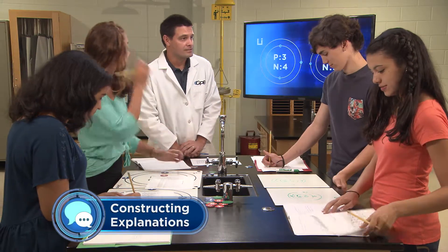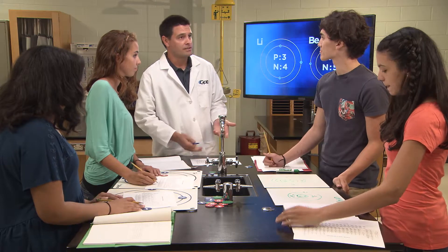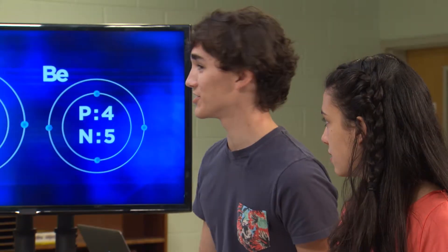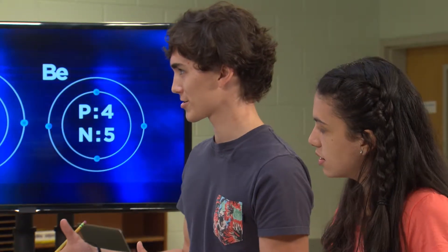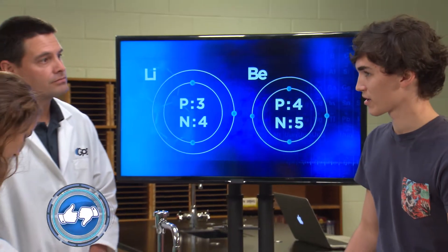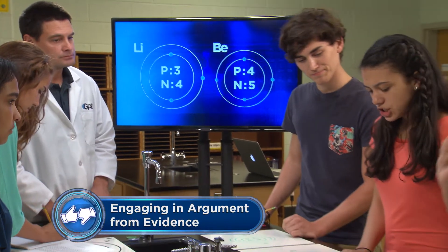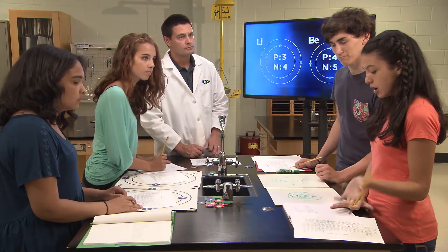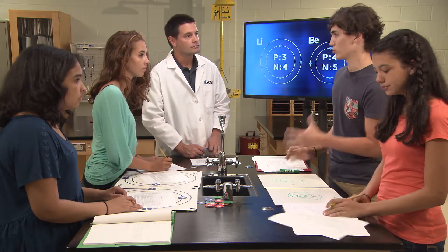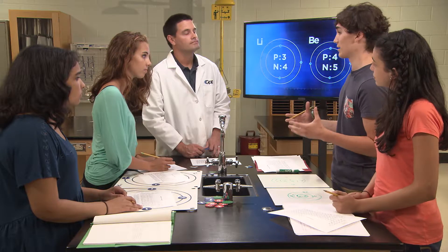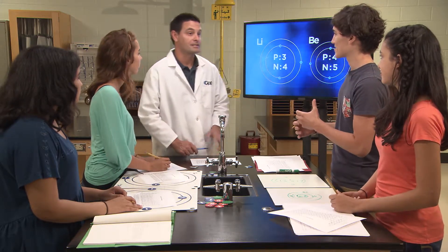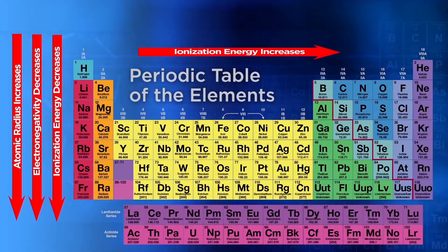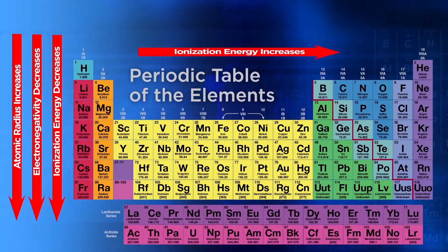Let's see what everyone predicted for the periodic trends across a period. Starting with ionization energy — we figured out that it increases across a period. Let's justify that conclusion: ionization energy increases across a period because the attraction between the nucleus and the electron increases, making it harder to remove an electron. The effective nuclear charge increases because more protons are being added as you move across a period. That's a very good explanation. So let's add that trend to our periodic table — ionization energy increases as we move left to right across a period.